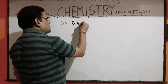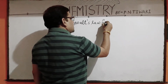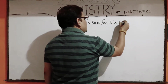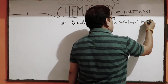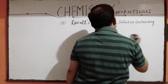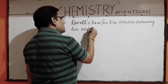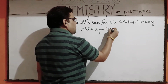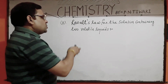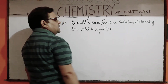Note down in your copies properly. Raoult's law for solutions containing two volatile liquids. If both the liquids are volatile and both can be converted into their respective vapours, then it is a specific solution containing two volatile liquids.